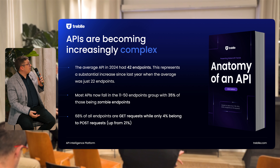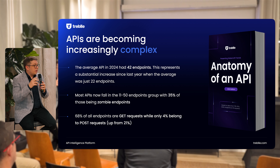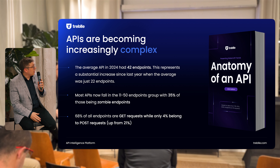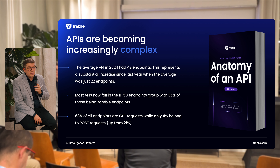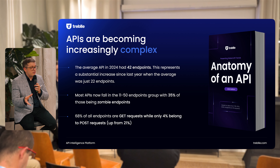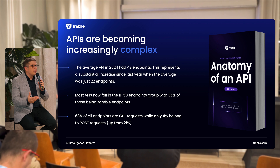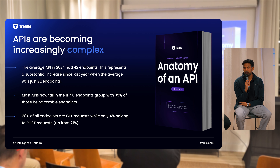Not only has the number of APIs grown, but we grouped APIs by scale: below 10 endpoints, 11 to 50, 50 to 100, and 100 and above. The biggest growth happened from the 1–10 group to the 11–50 group, where that group grew 35%. Essentially, people went from having really small, sophisticated APIs — probably microservices — to having these bigger, more complex APIs that require a lot more nuance and experience to control, manage, and understand.